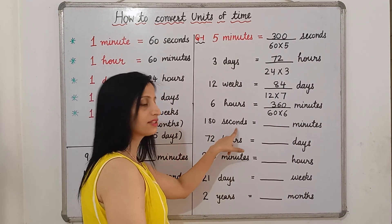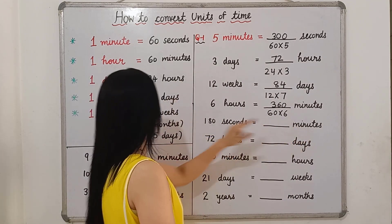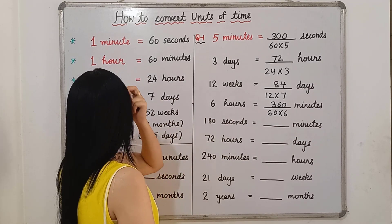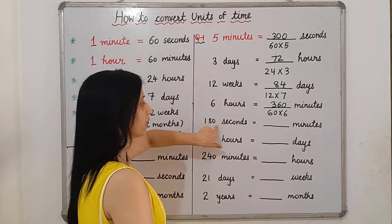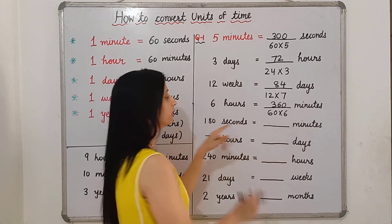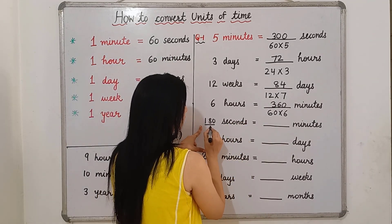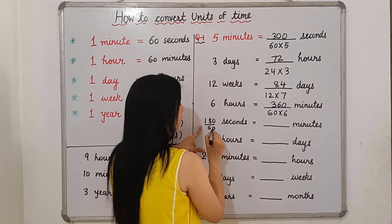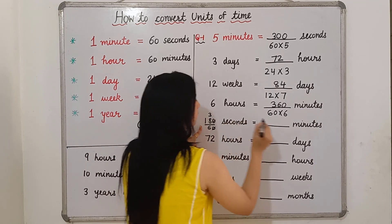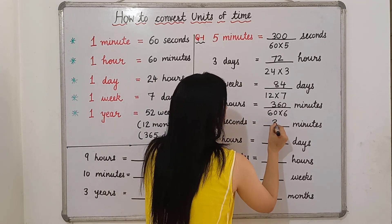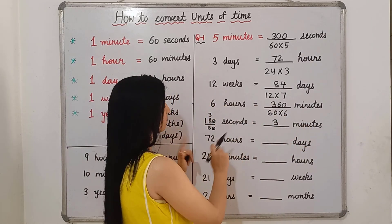180 seconds is equal to how many minutes? We know that in 1 minute there are 60 seconds, so 180 seconds divided by 60. We will get 3. This means 3 minutes is equal to 180 seconds.